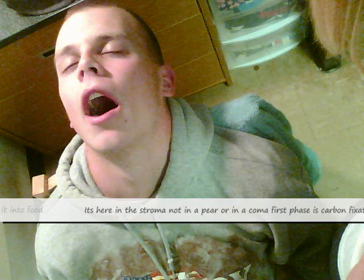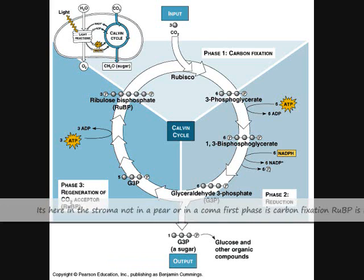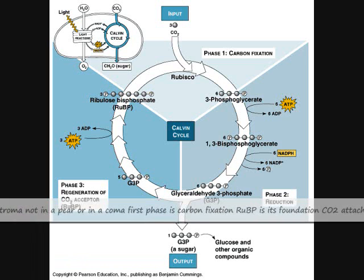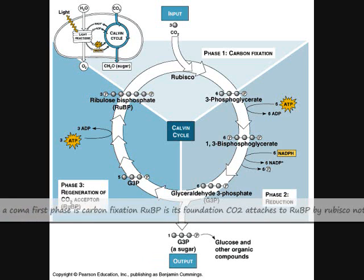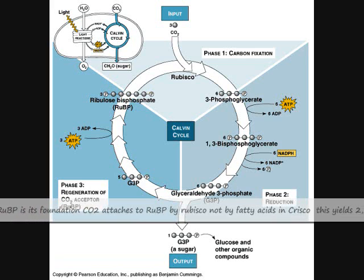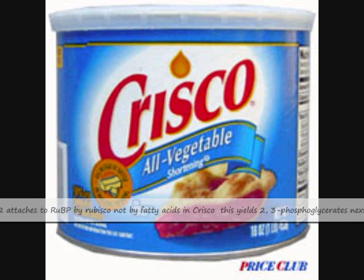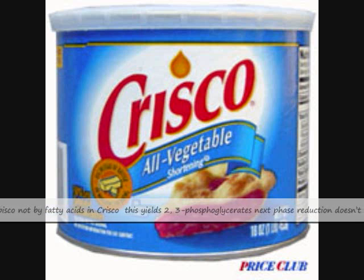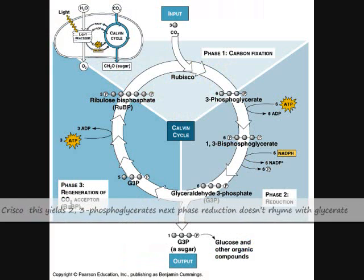The first phase is carbon fixation — RuBP is its foundation. CO2 attaches to RuBP by rubisco, not by fatty acids. This yields two 3-phosphoglycerate molecules.